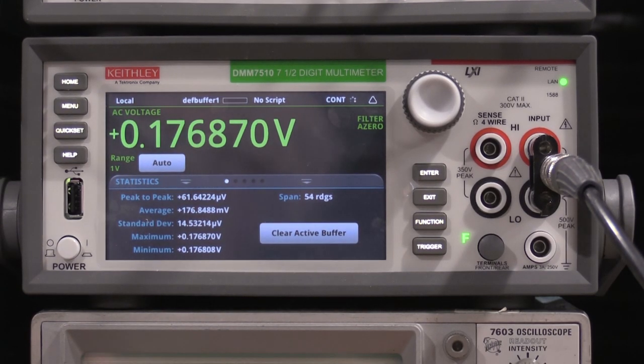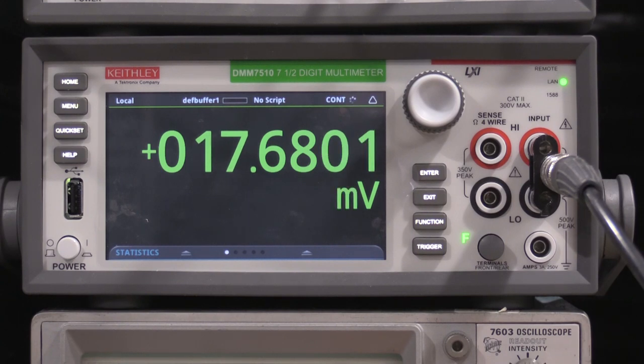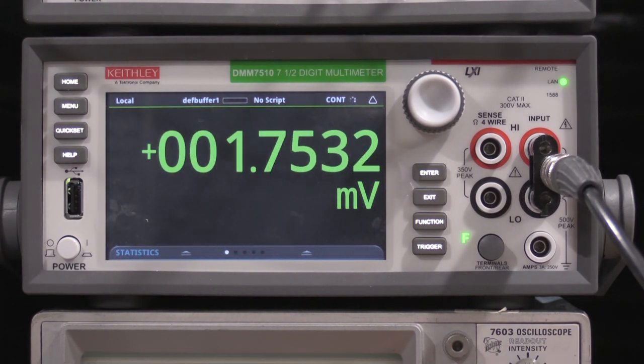So we need to check the multiplier now. We'll go down to 0.1. And this should go to 0.0176. Yep, that looks good. Let it get another reading. Let's check the 0.01. So that should be 1.76. And that's looking pretty good as well.